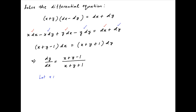Now let x + y be equal to z. Taking the derivative of both sides with respect to x, we get 1 + dy/dx is equal to dz/dx, and therefore dy/dx is equal to dz/dx minus 1.